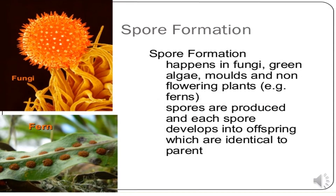Now come to spore formation. Spore formation happens in fungi, green algae, molds, and non-flowering plants. Spores are produced and each spore develops into an offspring which is identical to its parent. Examples include fungi and fern.